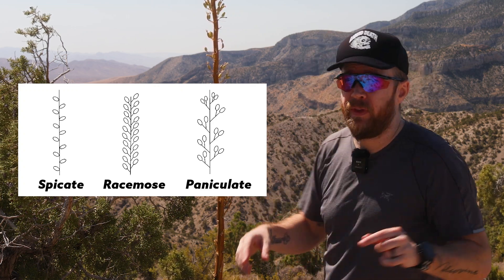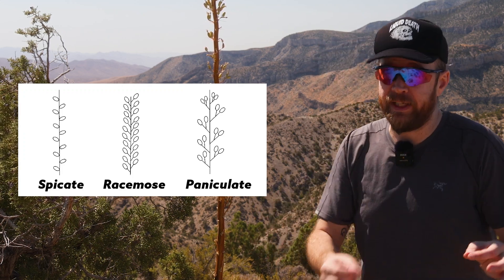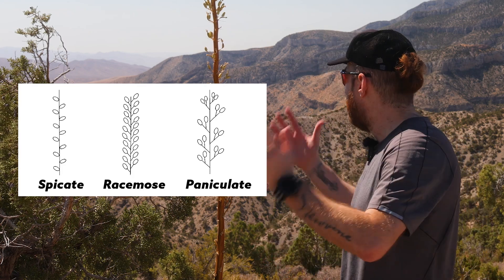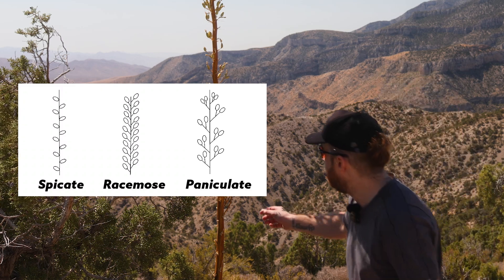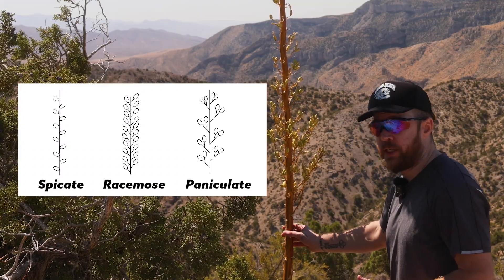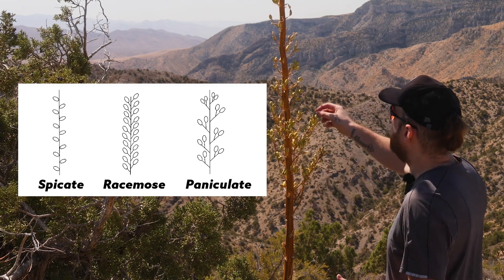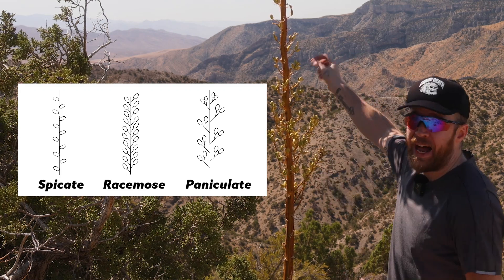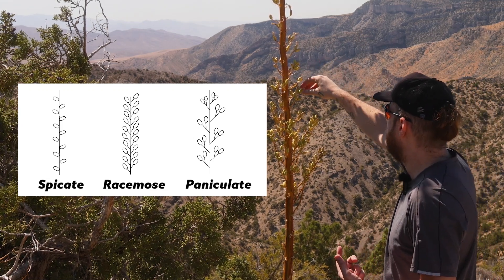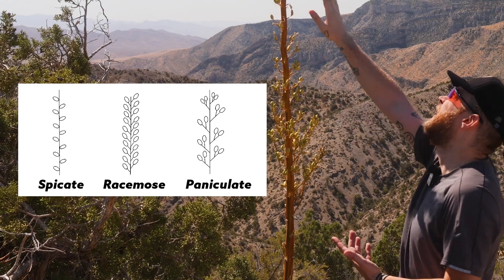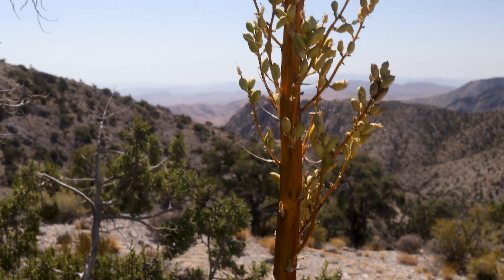This right here is the first time I can remember seeing an Agave utahensis nevadensis produce a paniculate flower stalk. Paniculate flower stalks are much more complex — from this central flower stalk there are a number of much longer branches that themselves have a bunch of flowers coming off. The flowers are dried now and they're seed pods, fruiting bodies. But this is the first time I can remember seeing a paniculate flower stalk on an Agave utahensis nevadensis.